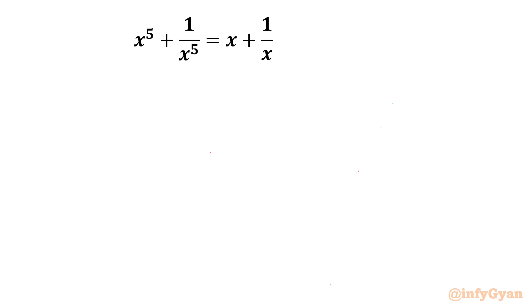Method number 1 is the algebra and algebraic identities method. And the second method would be using binomial expansion. So let us begin with method number 1.